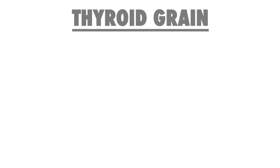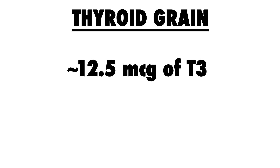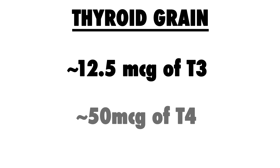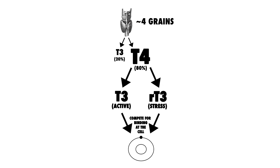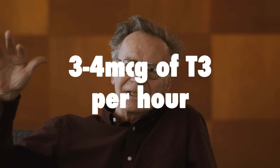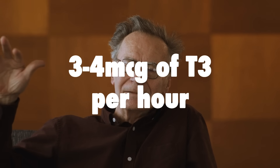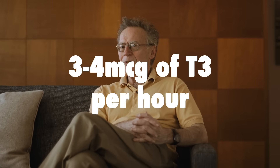Thyroid is measured in grains, with one grain equating to approximately 12.5 micrograms of T3, or active thyroid hormone, and 50 micrograms of T4, the inactive form. The thyroid gland produces approximately four grains per day, and since T4 is converted into T3 in local cells and tissues, Ray Peat approximated that about three to four micrograms of T3 is actually produced per hour.